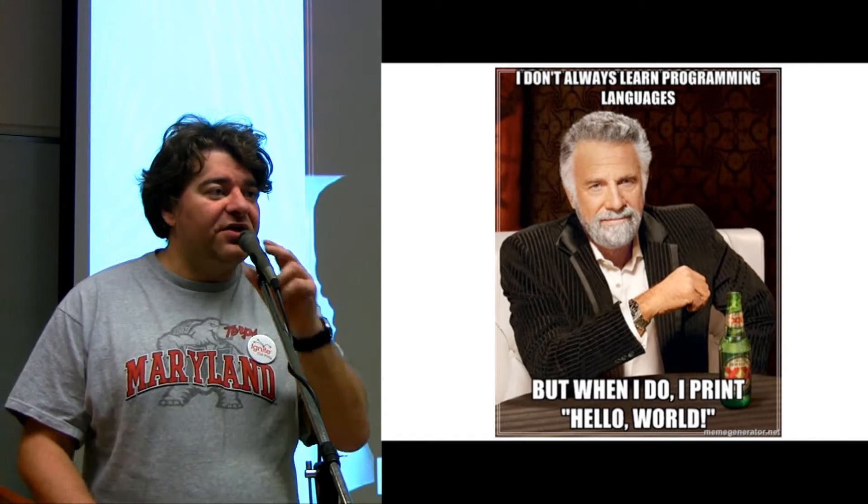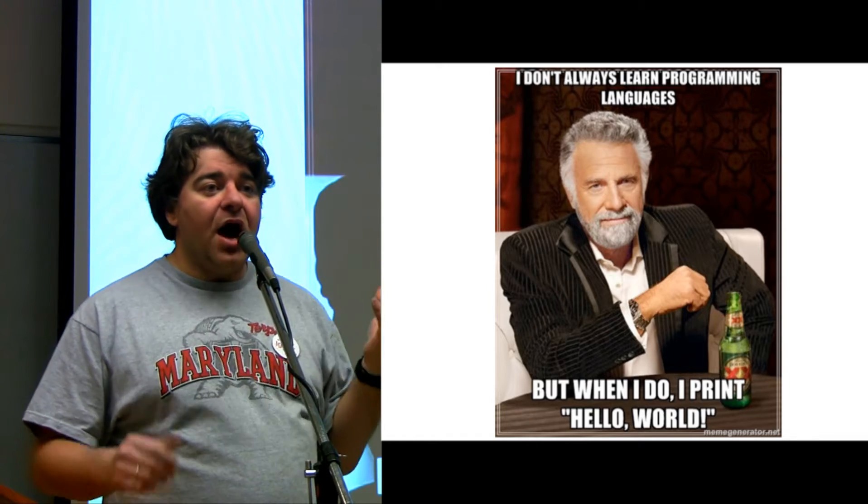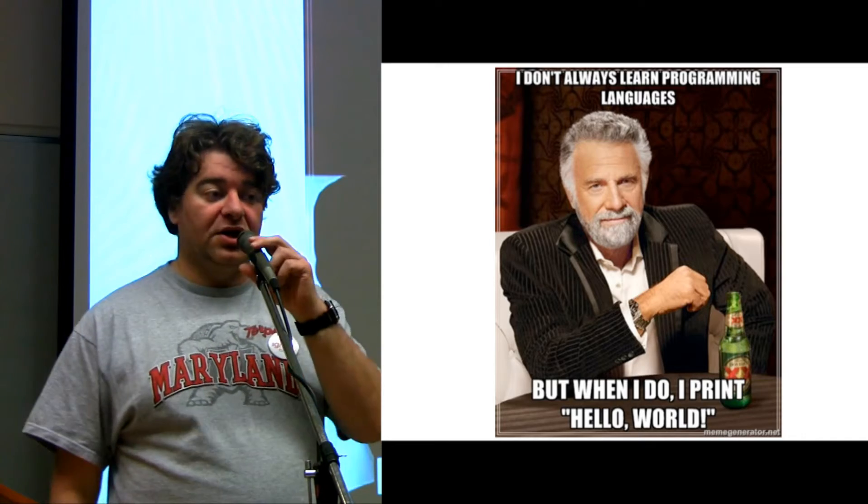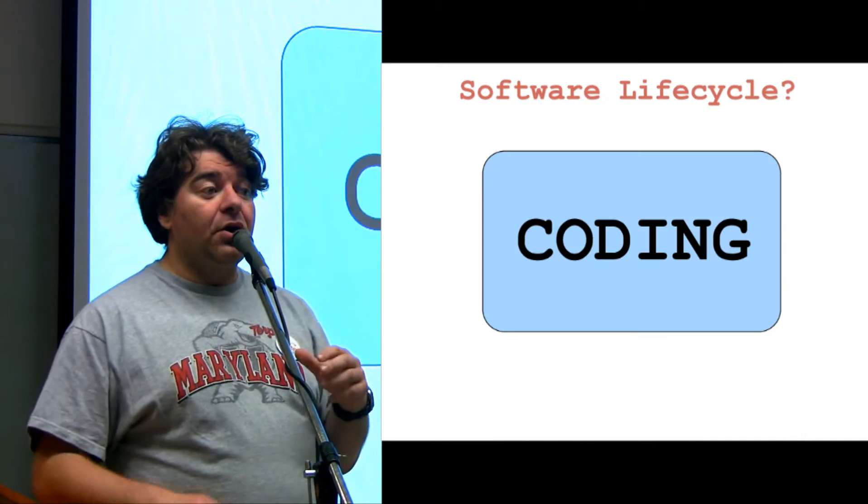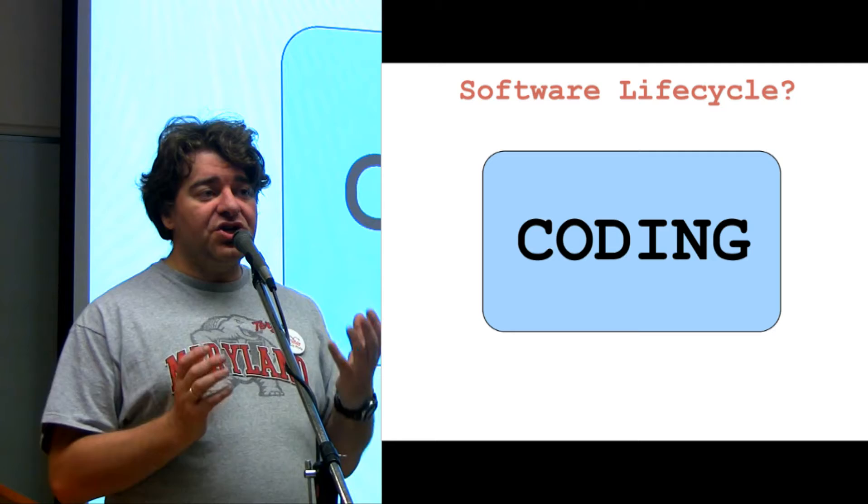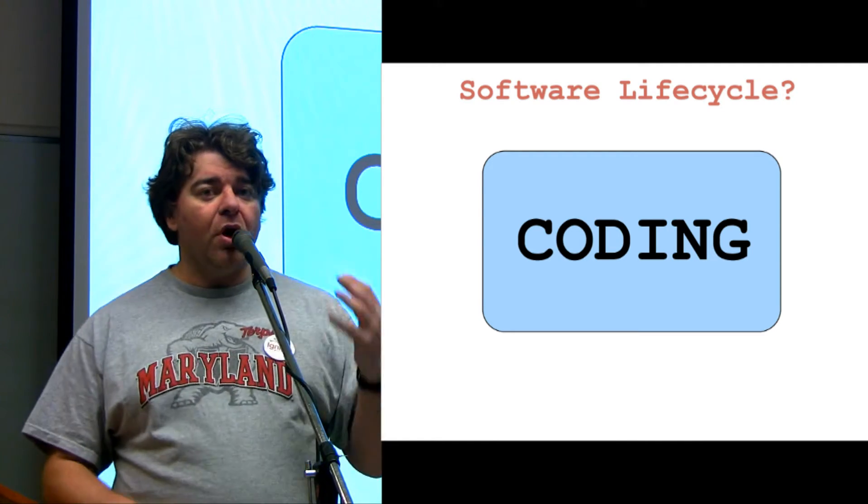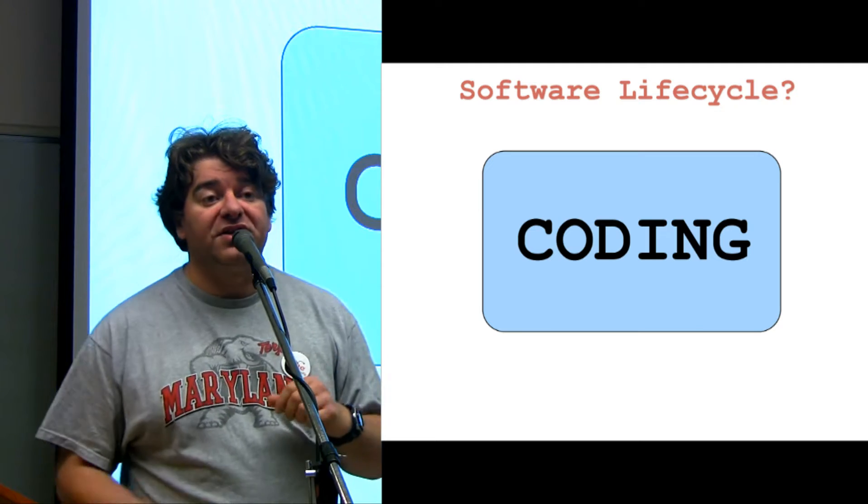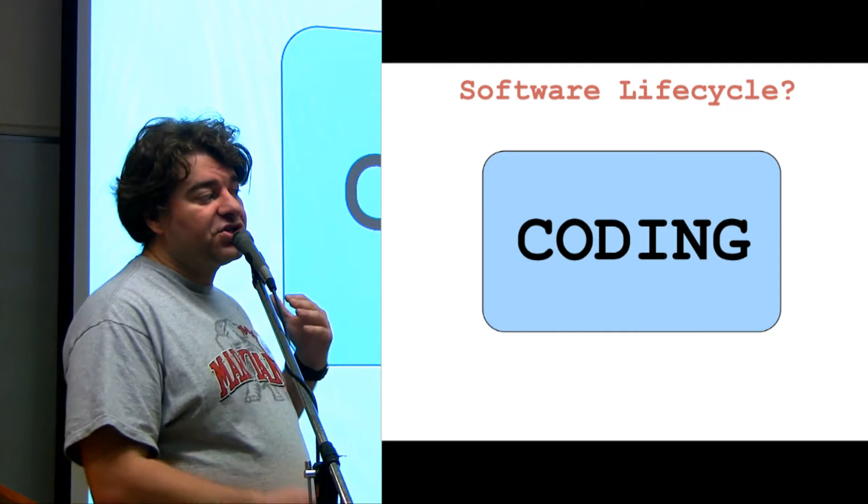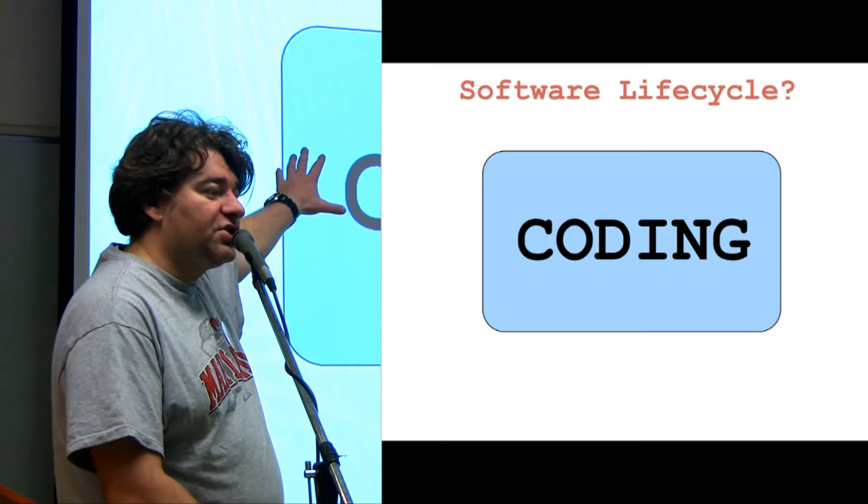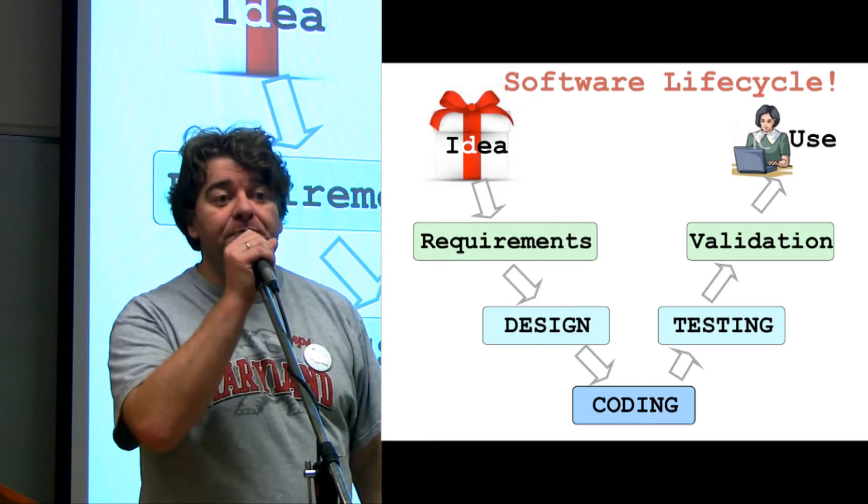So basically, the first thing you guys can ask is, how can I be a software engineer if I don't know how to program? Especially for those of you who are not planning on being a software engineer or computer scientist. What I want to tell you is that essentially, for the large point I'm trying to make, programming or being able to program is irrelevant. This is an opinion that's usually held by people who think that all there is to software development is right here. It's just coding. That is actually technically not true.